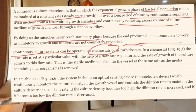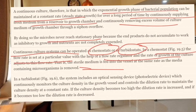The Chemostat method involves maintaining a flow of particular nutrients or supply into the culture vessel while continuously removing waste products and secondary products. This maintains the continuous culture. Chemical monitoring is carried out in the chemostat method.